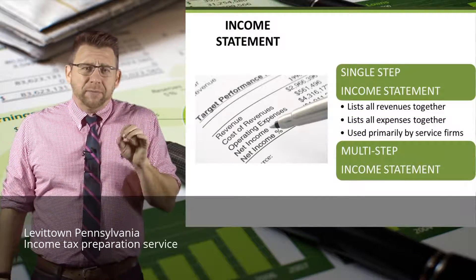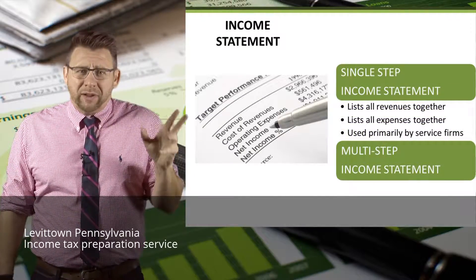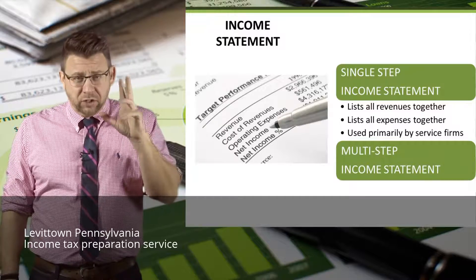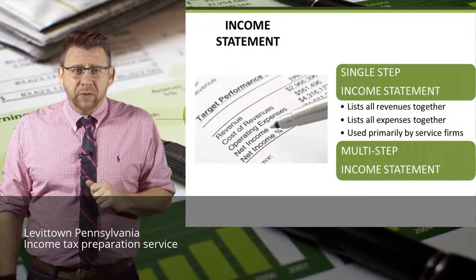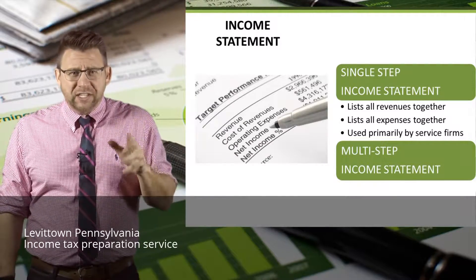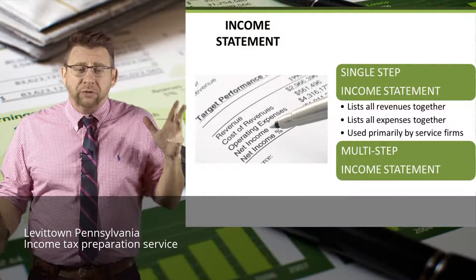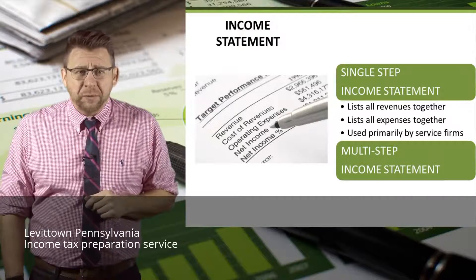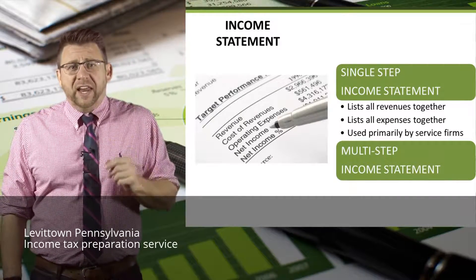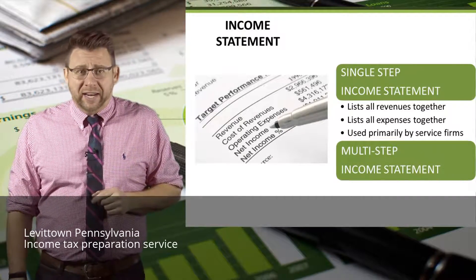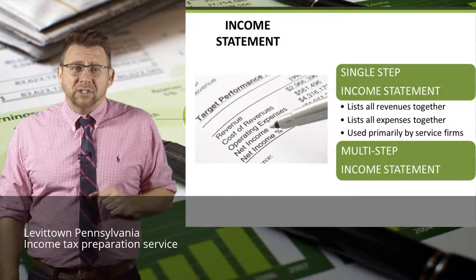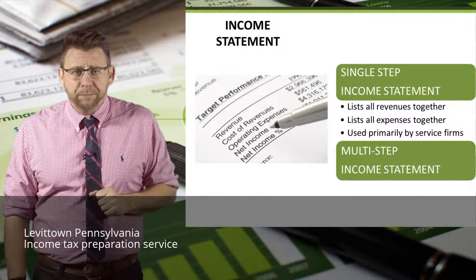The single-step income statement lists all revenues together and totals them for total revenue. Then all expenses are listed together and totaled for total expenses. The difference is then net income. This format is primarily used by service firms.